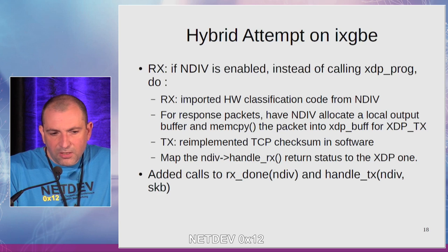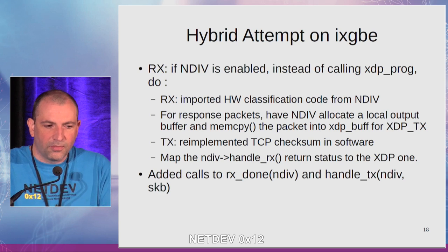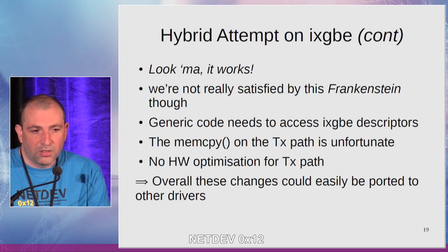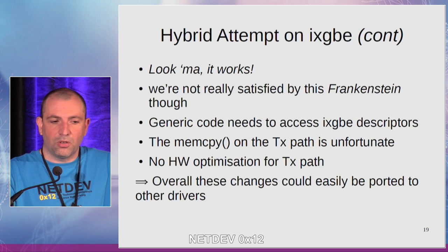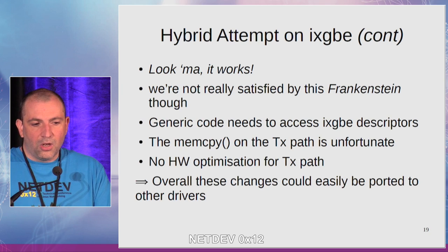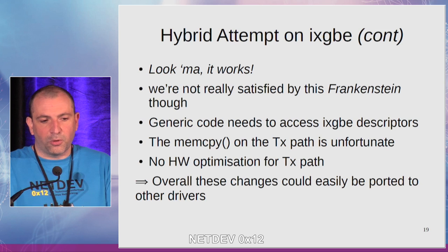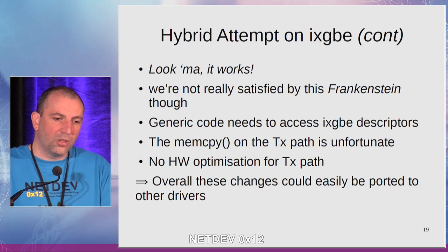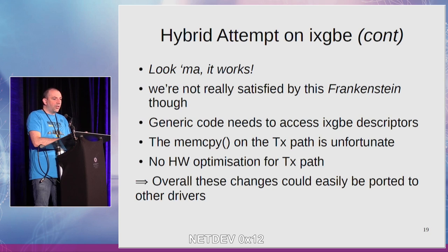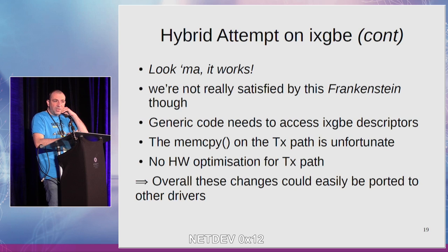At the end, we just had to map the NDEV action to the corresponding XDP action. And finally, we added the two missing callbacks, RxDone and the TX callback, which are mandatory for the NDEV application. Doing this, it works. We are not really satisfied because there is some generic code which accesses the IGB descriptor, the memcpy on the TX path is unfortunate, and we have lost the hardware optimization for TX checksum offloading. Overall though, these changes are very minor and can be easily ported to another driver. This attempt was done on the IGB driver because it was already supported by NDEV in a previous version.